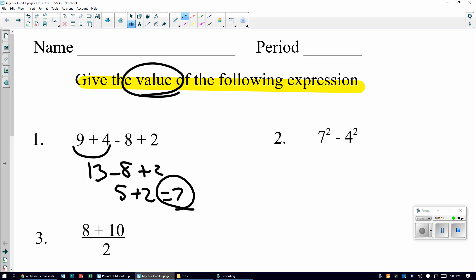Parentheses, none. Exponents, yes. 7 squared is 49. 4 squared is 16. Multiplication and division from left to right, none. Addition and subtraction from left to right, yes. 49 minus 16 is 33.